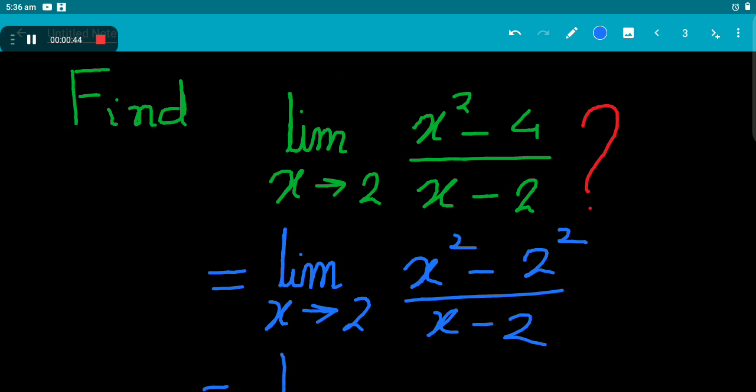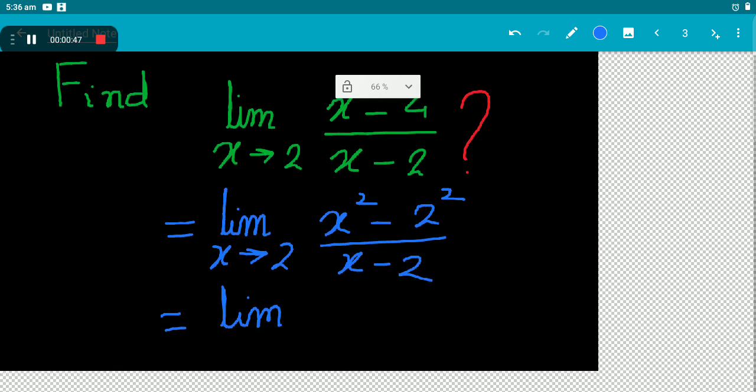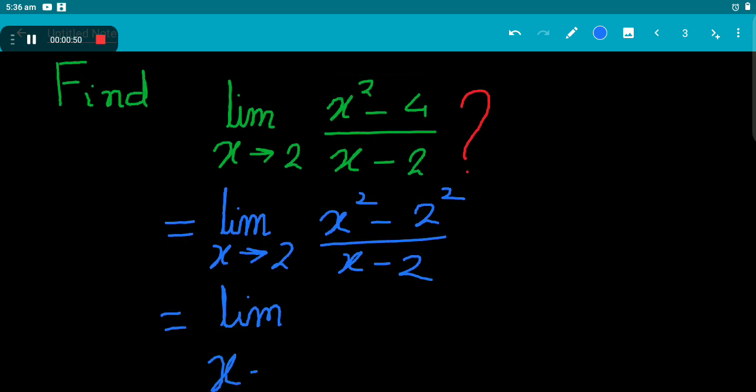So that is equal to limit x tends to 2. x² - 2² can be written as (x + 2)(x - 2).